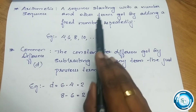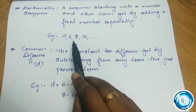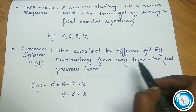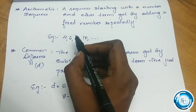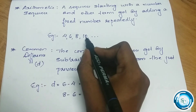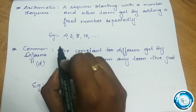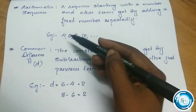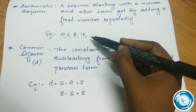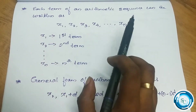One number starts and we keep adding a fixed number. The difference is constant — that constant difference is called the common difference. It is calculated by subtracting any term from the term just after it. For example, 6 minus 4 equals 2, and 8 minus 6 equals 2. The common difference is the same, so this is an arithmetic sequence.